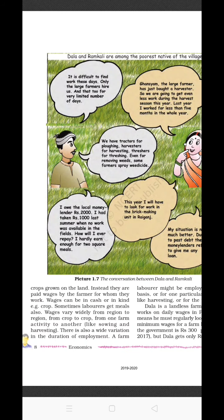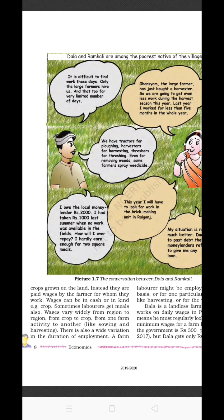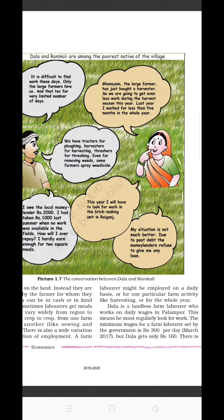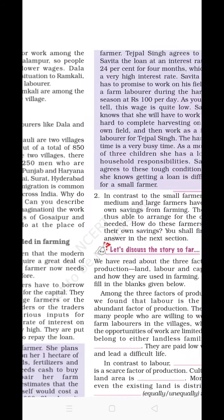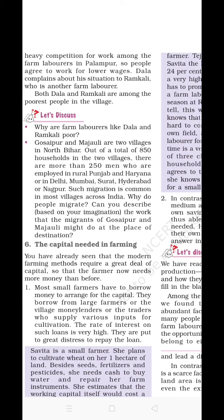Consider the example of Dala and Ramkali, two small farmers talking about their need for work. They have to go to large or big farmers for employment. Dala is a landless farmer laborer who works on daily wages in Pallampool. The minimum wages decided by the government is 300 rupees per day, but Dala gets only 160 rupees per day. This amount is quite less, but they have no other option because there is a lot of competition in the labor field — if they demand higher wages, they are unable to get work.